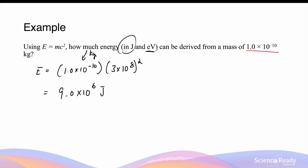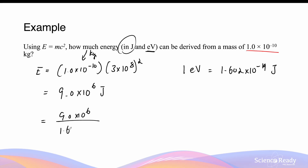What about electron volts? Remember that 1 electron volt is equal to 1.602 × 10⁻¹⁹ joules. So to convert energy from joules into electron volts, we divide this number by the charge of an electron. So we do 9.0 × 10⁶ divided by 1.602 × 10⁻¹⁹, and this gives us 5.6 × 10²⁵ electron volts.